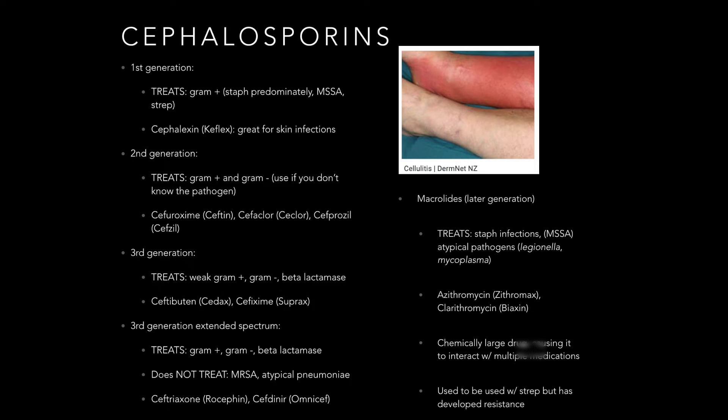Macrolides — azithromycin, clarithromycin — are effective against staph infection and atypical pathogens. Unfortunately, we've used them quite a bit and a lot of bacteria have built up resistance. Also, chemically they're a very large drug, so they interact with a lot of different medications — we just have to be cautious with that.